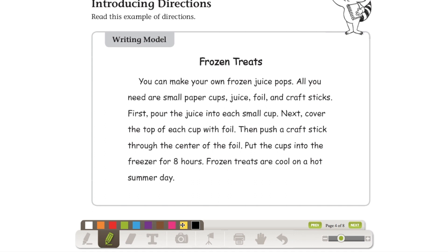Frozen treats are cool on a hot summer day. I think you guys know what I'm going to say next. We're going to go and find the topic sentence. It's about frozen treats, but we need a sentence to tell what the paragraph is about. You can make your own frozen juice pops. This tells us what we're going to talk about in this paragraph today.